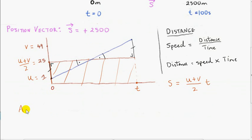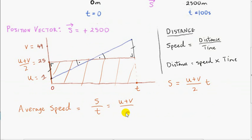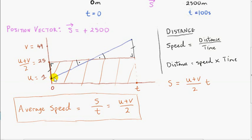Now let's consider the average speed for the journey. The average speed is the distance s divided by the time taken t. If we rearrange this formula by dividing both sides by t, we get s over t equals u plus v over 2. It's important to realize that this is the average speed for an object undergoing uniform acceleration. If the object was not undergoing uniform acceleration, the velocity-time graph would not be a straight line. We only cover situations where the velocity-time graph is a straight line, so to get the average velocity, just add the initial and final velocities and divide by 2.